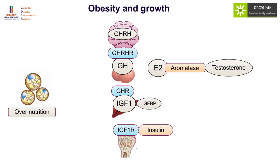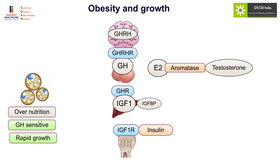In general, over-nutrition results in a state of growth hormone sensitivity and rapid growth. However, the direct effect of obesity on growth hormone is to reduce GH levels, meaning the body becomes more sensitive. Therefore, individuals with obesity may have a falsely positive growth hormone stimulation test. This has prompted the use of separate cut-offs for growth hormone in obese adults, though similar data is lacking in children and is not routinely recommended.